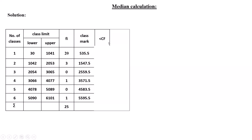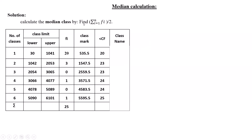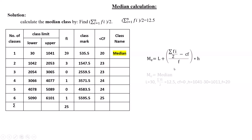The cumulative frequencies are: 20, then 20 + 3 = 23, then 23 + 0 = 23, then 24, then 24, then 25. To determine the median class, we compute Σf/2 = 25/2 = 12.5. The cumulative frequency value greater than and nearest to 12.5 is 20, so the first class (30 to 1041) is the median class.